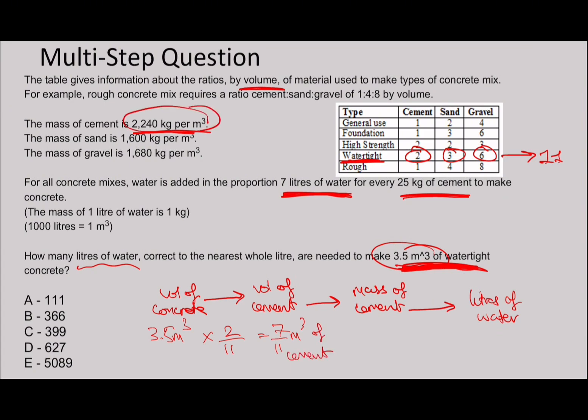Then to convert it into a mass of cement, you can see this is the mass per meter cubed, so times this by 2,240. So 7 divided by 11 times 2,240, which gives you 1,425.4545 recurring kilograms of cement. So then from mass of cement, got to go to liters of water. Remember what we figured out here, every 25 kg of cement, you have 7 liters. So you've got to figure out how many lots of 25 you have. So you divide by 25, which gives you 57.01. And for every lot of 25, you have 7 liters of water. So then you just multiply that by 7.